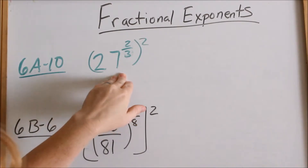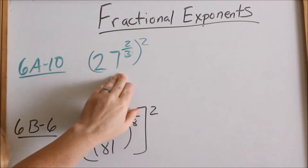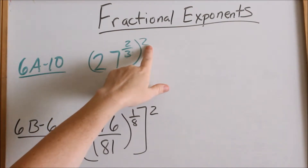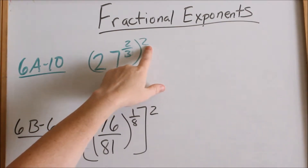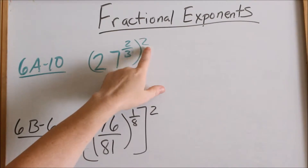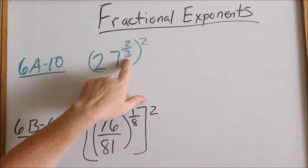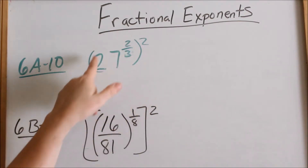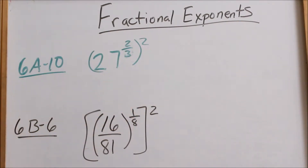There are several different ways you can do this. Here we have 27 to the 2/3 raised to the second power. One of the main things to remember is when you have an exponent raised to an exponent, you can multiply those — you multiply, not add. But you can also simplify inside the parentheses first. Generally, that's what I do, though sometimes I go ahead and multiply these — it doesn't really matter.